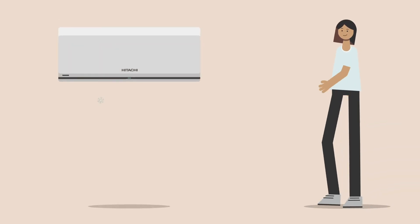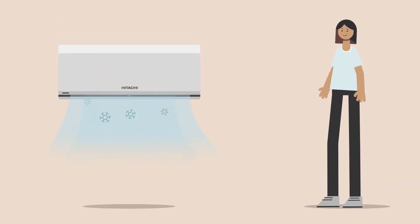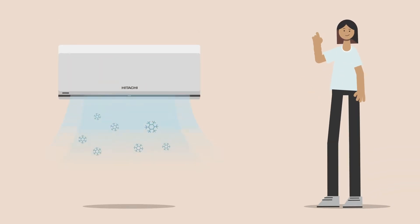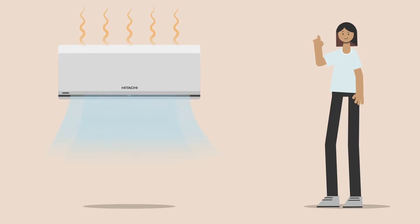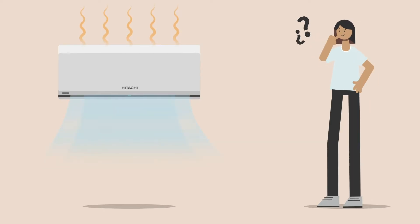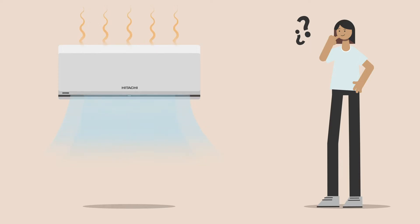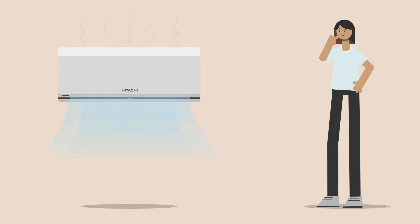The first thing to know is that air conditioning does not produce cold air, but rather removes heat and humidity from indoor spaces. But how? We're going to break down how the cooling cycle works into just four easy steps. Pay attention!